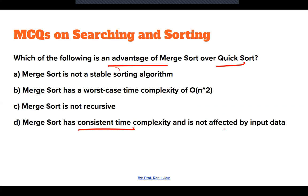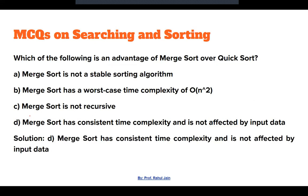Next: Which of the following is an advantage of merge sort over quick sort? Merge sort has a consistent time complexity not affected by input data. Whatever the input order — sorted, partially sorted, or reverse sorted — merge sort applies the same process every time. So option D is the correct answer.